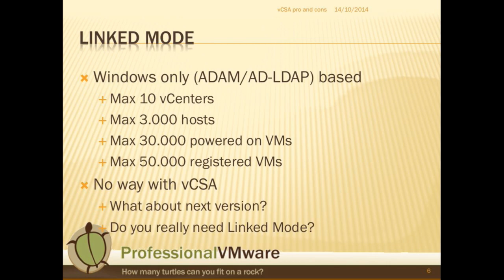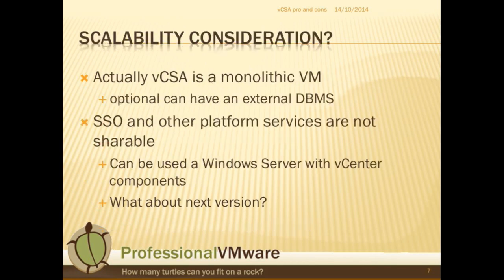So you can choose to use only the Windows version, or you can choose not to use linked mode and use the appliance version as well. What about scalability? Scalability could be an issue if you have a single monolithic VM with all the services on it. A monolithic system is better for protection, backup, or restore. But what if the appliance system can be more modular, with some parts shareable across multiple instances of the vCenter appliance — the core part like single sign-on? Actually, right now you can have single sign-on based on a Windows system to share this function across multiple virtual appliances.